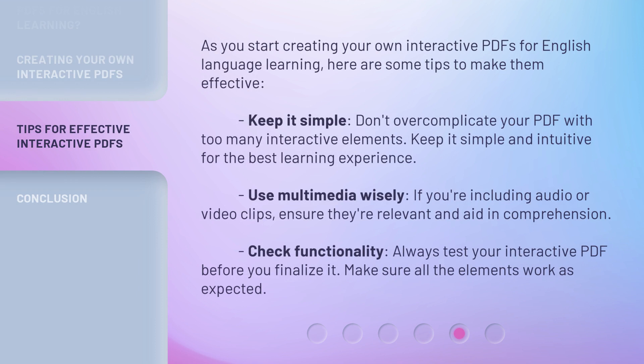As you start creating your own interactive PDFs for English language learning, here are some tips to make them effective. Keep it simple — don't overcomplicate your PDF with too many interactive elements; keep it simple and intuitive for the best learning experience. Use multimedia wisely: if you're including audio or video clips, ensure they're relevant and aid in comprehension. Check functionality: always test your interactive PDF before you finalize it and make sure all the elements work as expected.